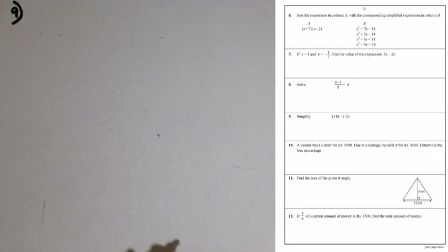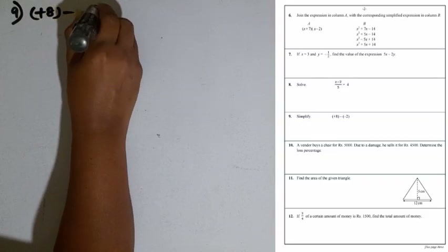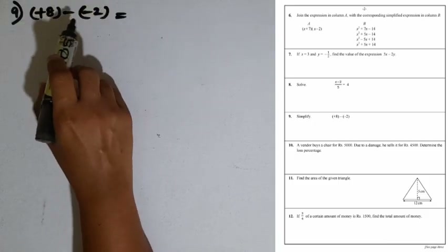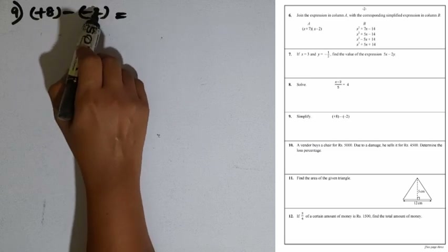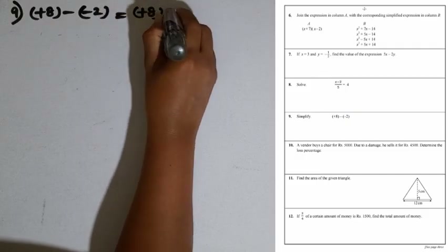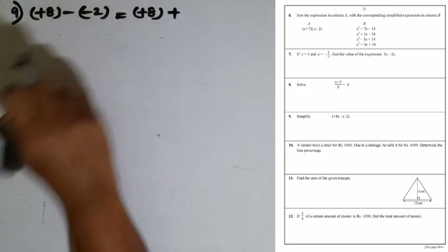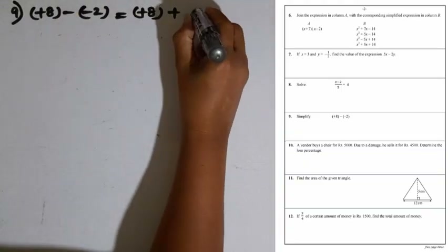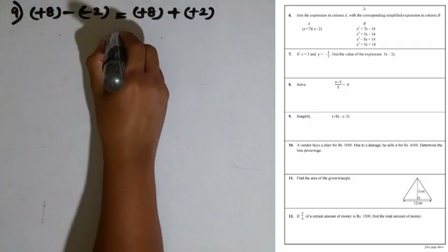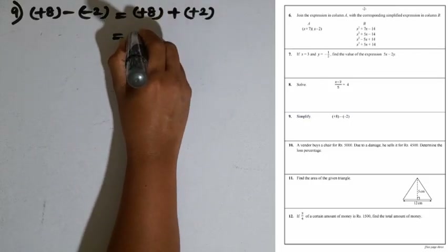We can also convert the subtraction into addition by taking the additive inverse of the second directed number. Writing it as plus 8, the subtraction becomes an addition, and we take the additive inverse of the second directed number, plus 2 — the same magnitude with opposite sign. So plus 8 plus plus 2: both are positive integers, giving plus 10.